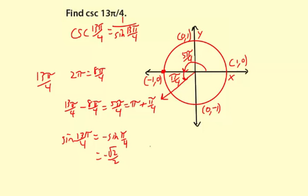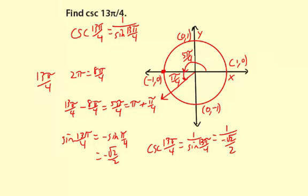Now what about the cosecant? The cosecant of 13π over 4 equals 1 over the sine of 13π over 4, and that equals 1 over negative √2 over 2. So basically we do the reciprocal of this sine value, which gives us negative 2 divided by the square root of 2. That's not rationalized, so multiply by √2 over √2, and we get negative 2√2 divided by 2.